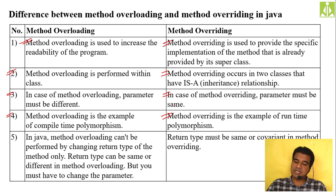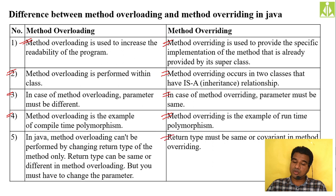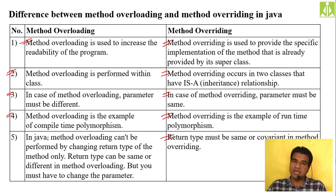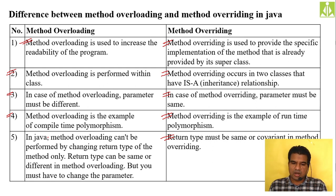Return type must be the same or covariant in method overriding — not only the method name and parameters, but also the return type needs to be the same. But in method overloading, simply changing the return type alone does not constitute method overloading; you cannot perform overloading just by changing the return type. These are some of the key differences between method overloading and method overriding.